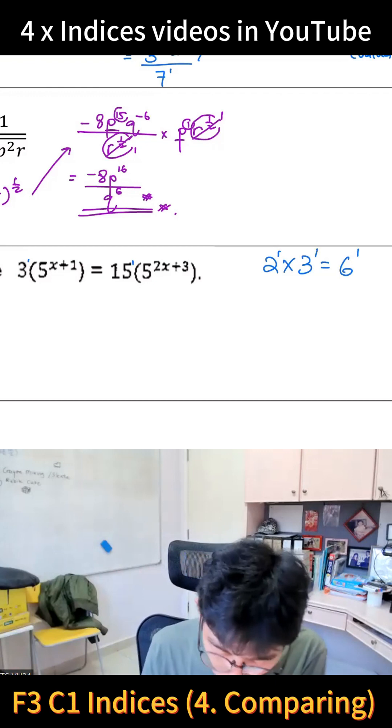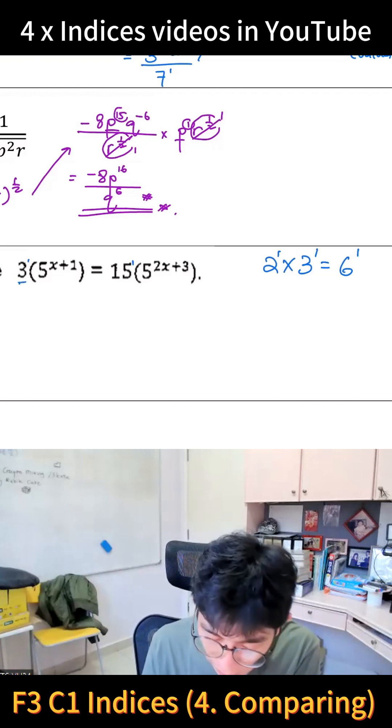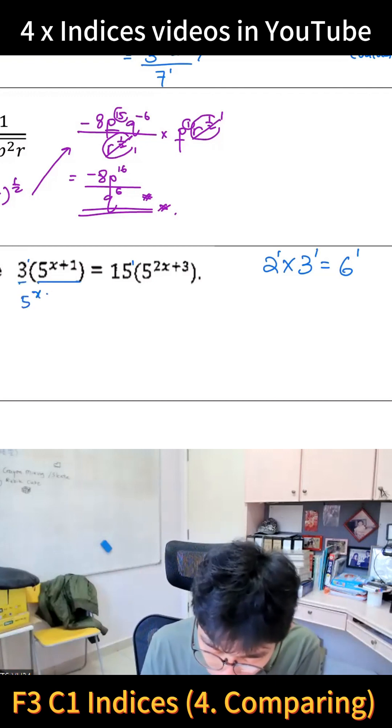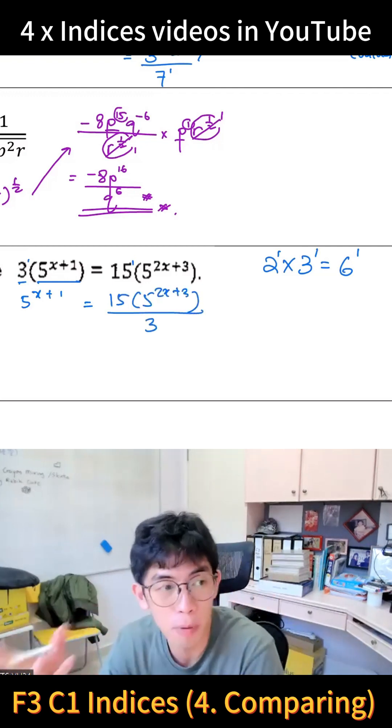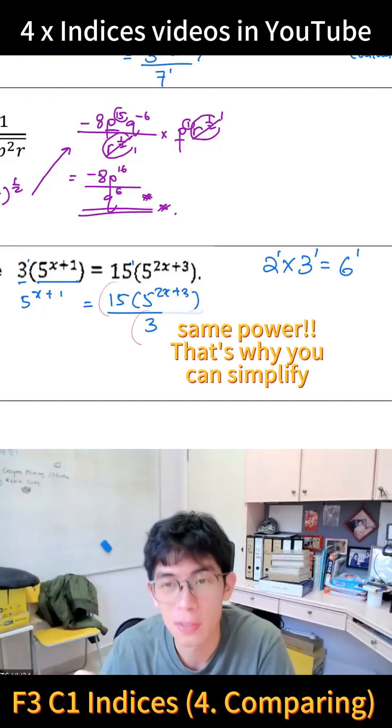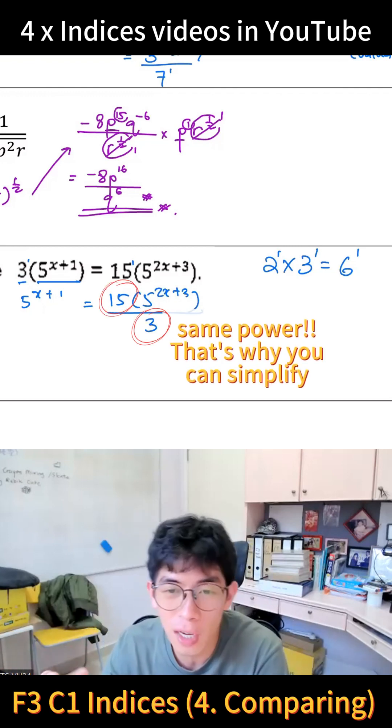So what you're going to do - because there are times, right? So 5^(x+1) equals 15 times 5^(2x+3), and you're going to move the 3 over to divide it to simplify it. So now you can simplify the 15 and 3, you get 1 and 5. Then I'm going to rewrite it one more time.